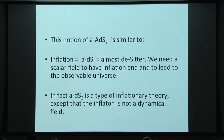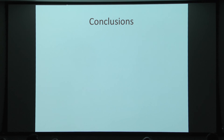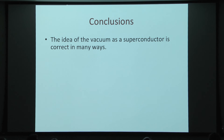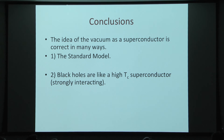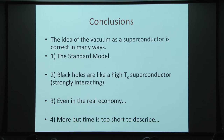In fact, we can change one sign in the Jackiw-Teitelboim model and have a type of inflationary theory where the inflaton is constrained, not dynamical — though I don't know whether that's useful. Conclusions: the idea of the vacuum as a superconductor is correct in many ways — it's of course correct for the standard model. We are now finding that black holes are a bit like high-Tc superconductors. More like high-Tc in the sense that we have a strongly interacting theory as opposed to a weakly interacting BCS theory. And we even have it in the real economy. Thank you.